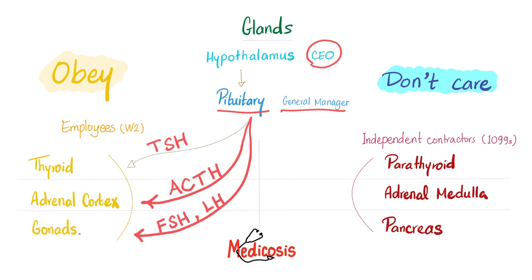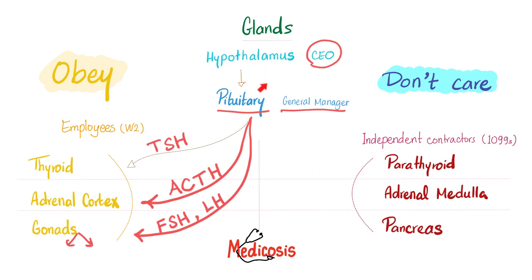What are the gonads? In females, they are the ovaries; in males, they are the testes. How about the independent contractors that do not obey the pituitary? They do not care. Instead of thyroid, say parathyroid. Instead of the cortex of the adrenal gland, say medulla of the adrenal gland. And instead of the gonads, we have the pancreas. Your pituitary, which is part of the brain, has no influence over the pancreas. The same could be said of the hypothalamus — it does not have a direct influence on your pancreas.